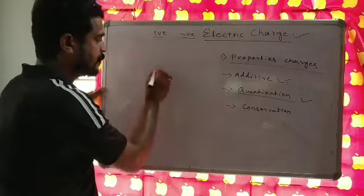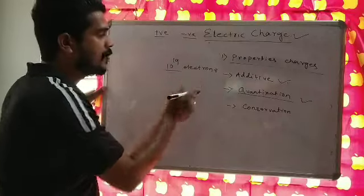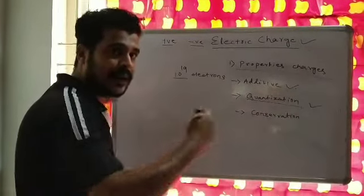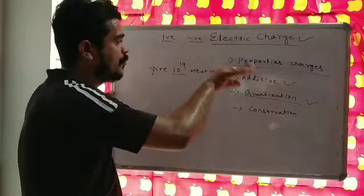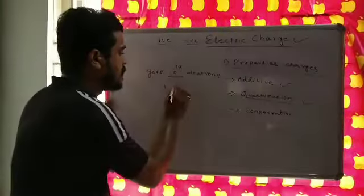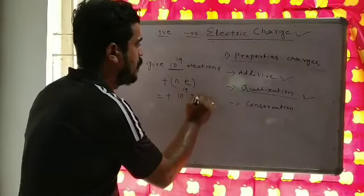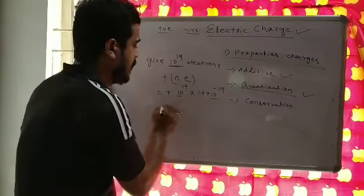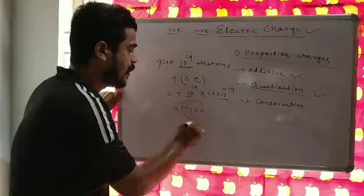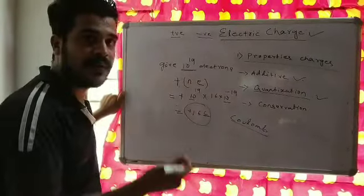In quantization problems, they may ask: if a body emits 10¹⁹ electrons, what is its charge? Since it is giving electrons it will be positively charged. The amount of charge is Q = ne = 10¹⁹ × 1.6 × 10⁻¹⁹ = 1.6 coulombs. Coulomb is the unit of charge, named after the scientist Coulomb who gave the law dealing with force between two charges.